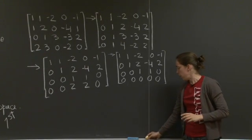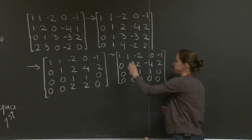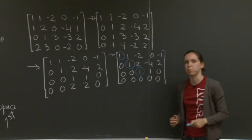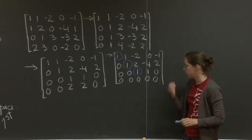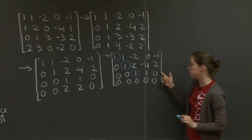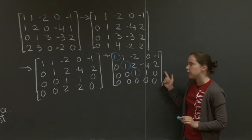All right, we're done with elimination. And so let's circle our pivots. Here are our pivots. We have three pivots. And so these three rows are linearly independent.